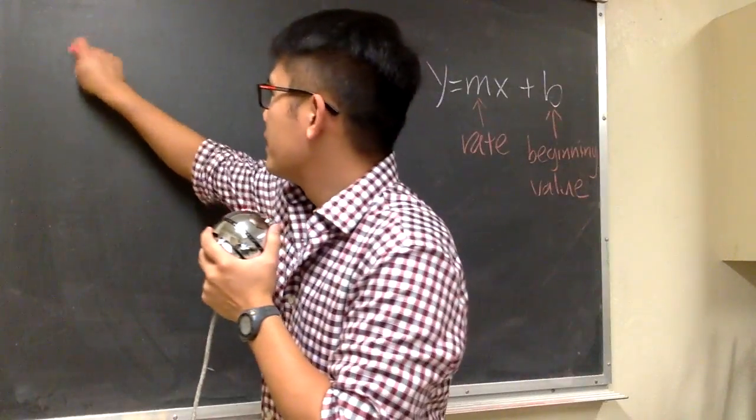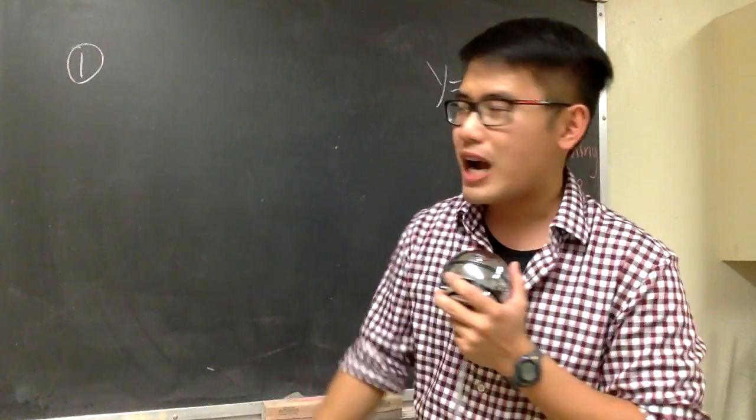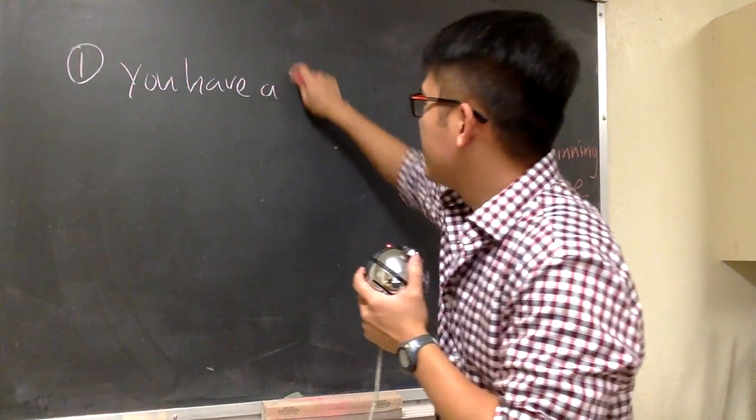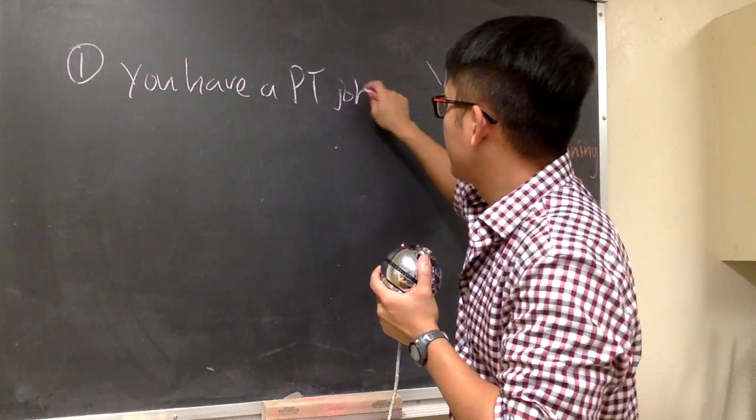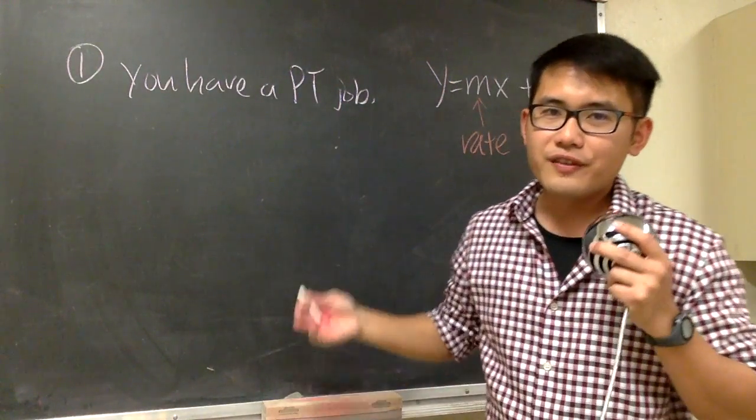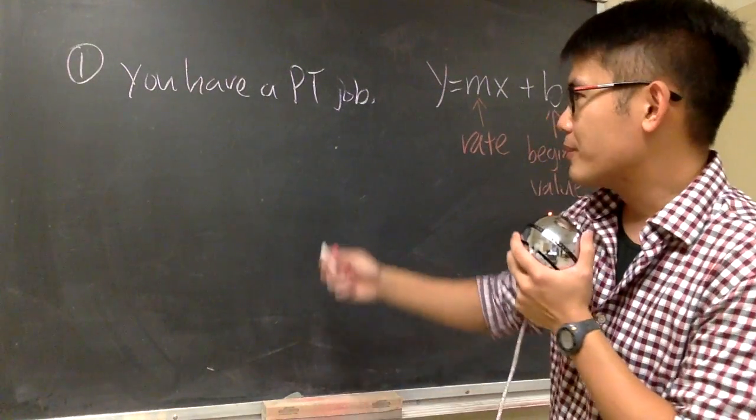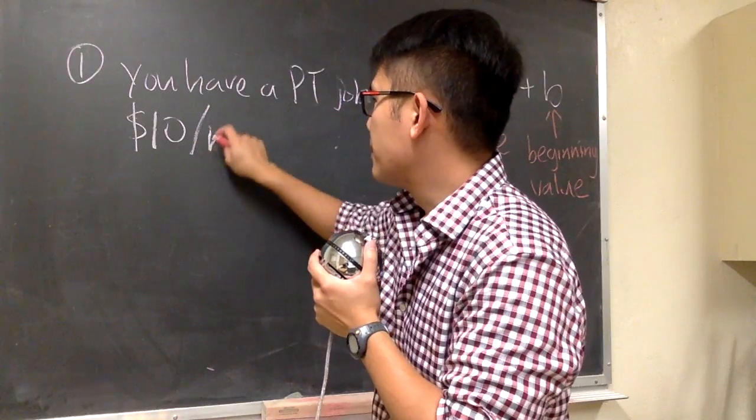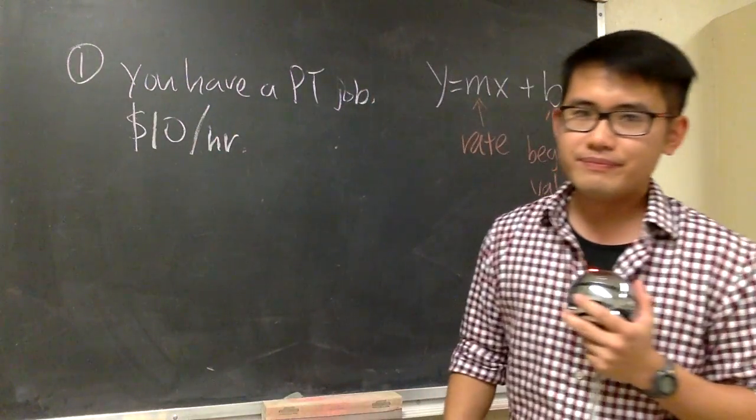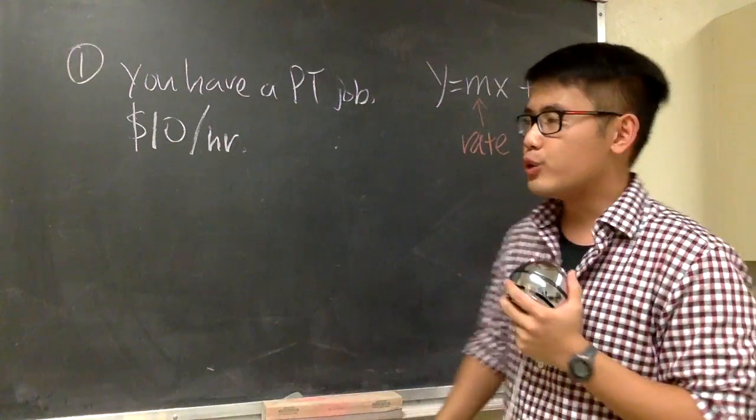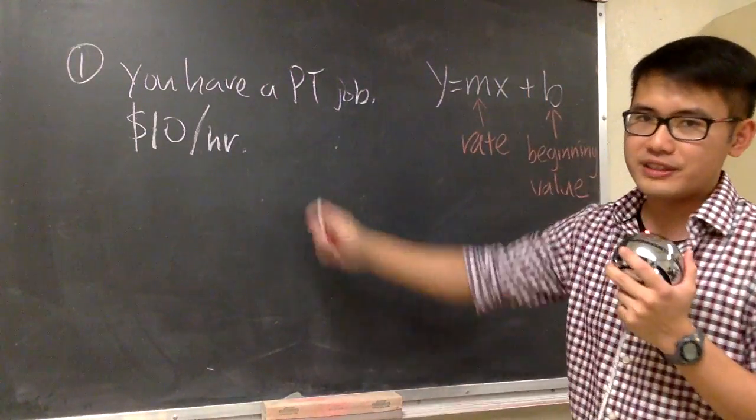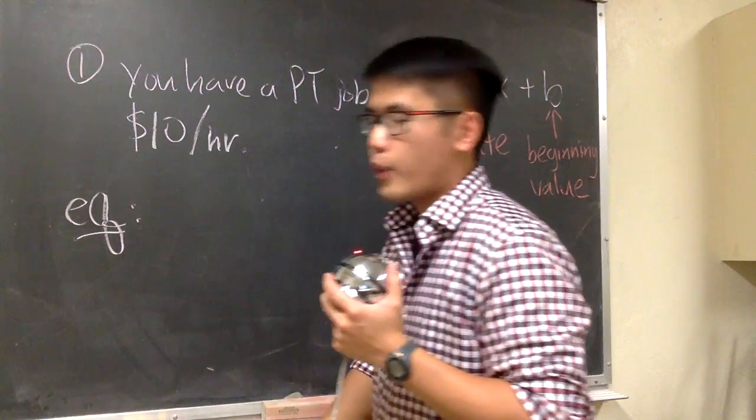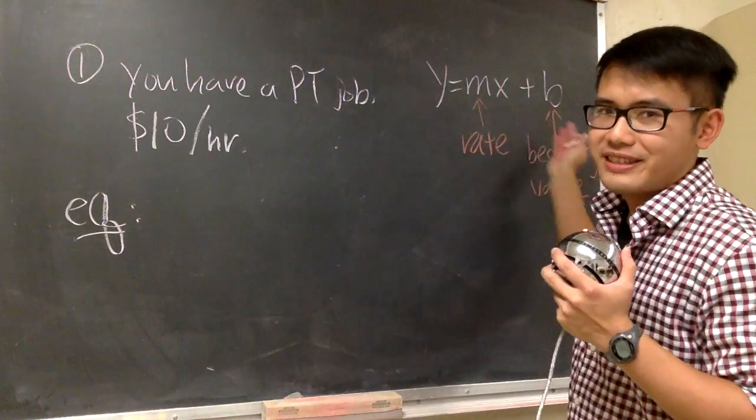So here's my first example. Besides going to school, you also have a part-time job. So let me write this down right here. You have a part-time job. And what's the reason of getting a job? Money, right? So, at your part-time job, you're going to get paid $10 per hour. And with all this information, we are ready to write a linear function for this, or linear equation. So I will write down equation, because I would like to write down y is equal to something.